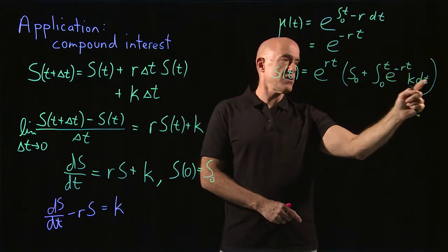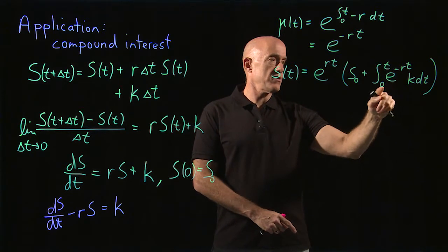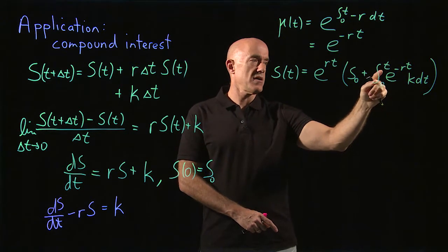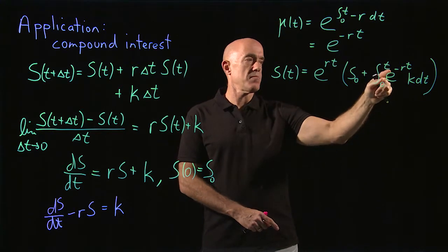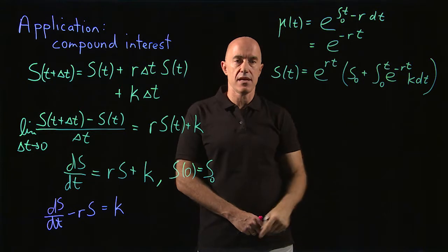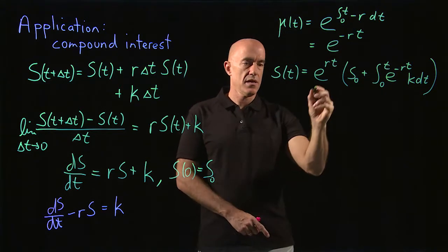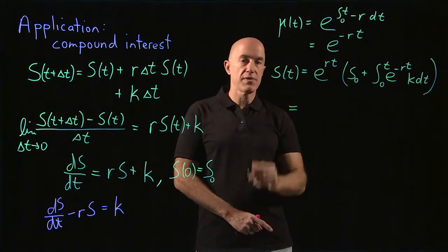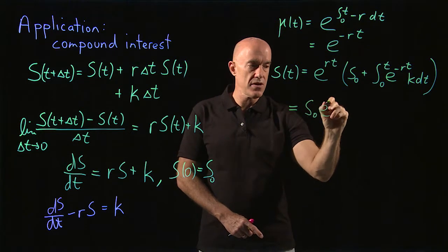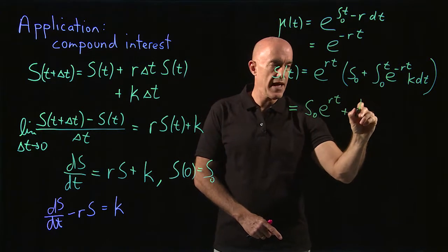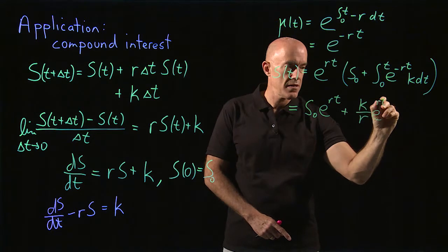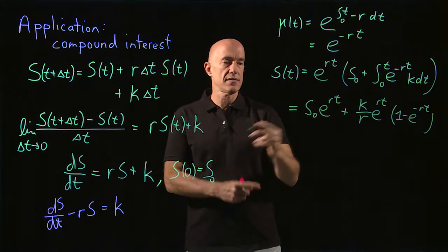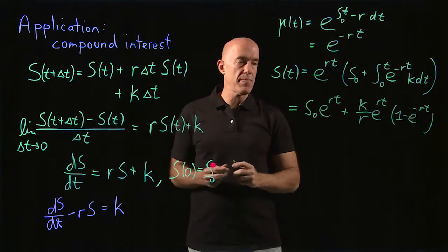That's our expression for the amount of money at time t. We have to do this integral, which is rather simple — we're integrating k (a constant) times e to the minus r·t dt. That becomes minus 1 over r times e to the minus r·t, evaluated at the upper minus lower limit. Multiplying through by e to the r·t, we obtain: s(t) = s-naught·e^(r·t) + (k/r)·e^(r·t)·(1 minus e^(minus r·t)). That's the solution to our compound interest problem.